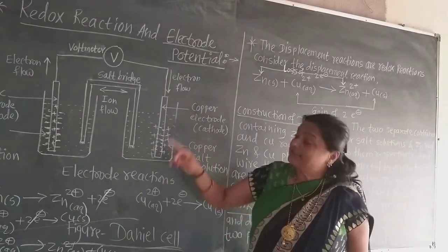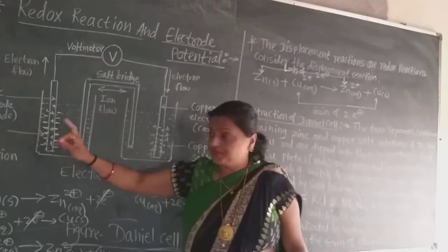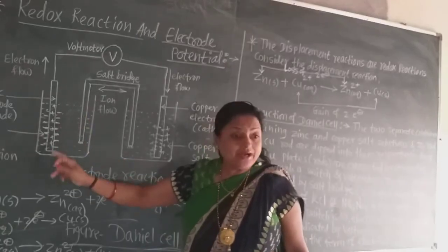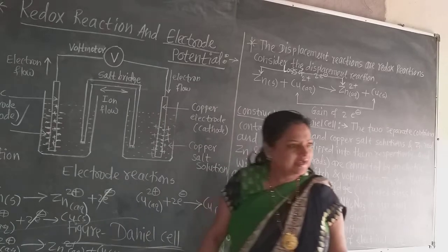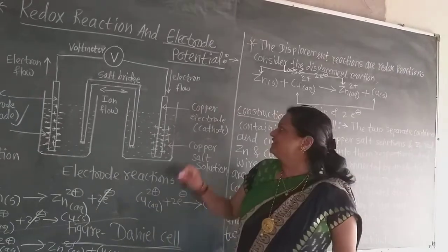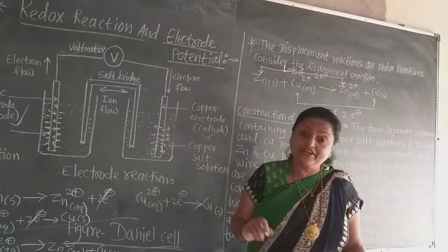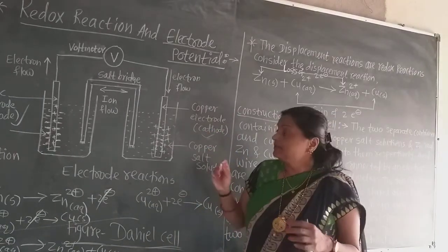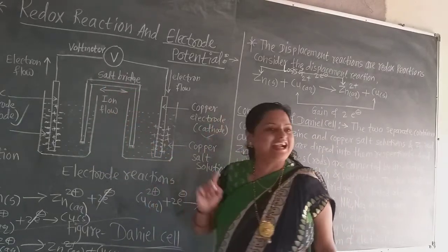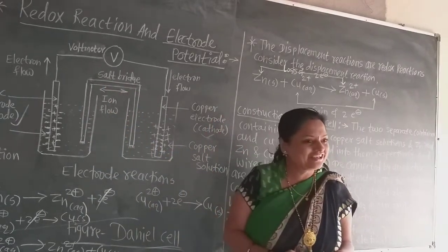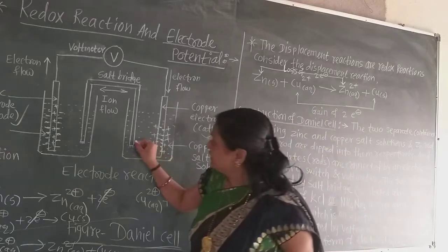Therefore it is called anode — anions — and cathode — cations — due to that. In this way, the element which is more reactive is called the anode, and the element which is less reactive is called the cathode. Now, what is this? This is the salt bridge.